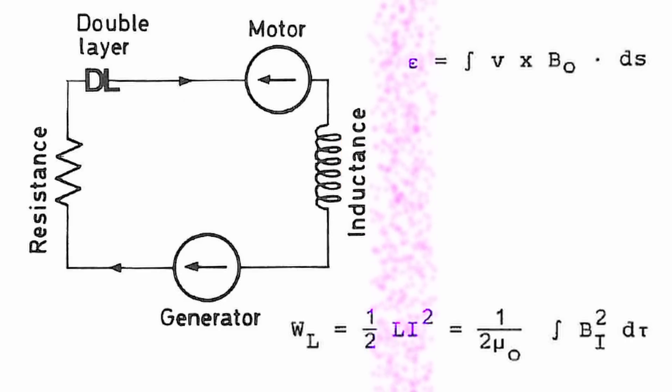If the EMF is greater than zero we have a generator transferring plasma power into the circuit. If the EMF is less than zero we have a motor transferring circuit energy into kinetic energy of the plasma. Finally, the circuit may contain a resistance R which dissipates power into heat.